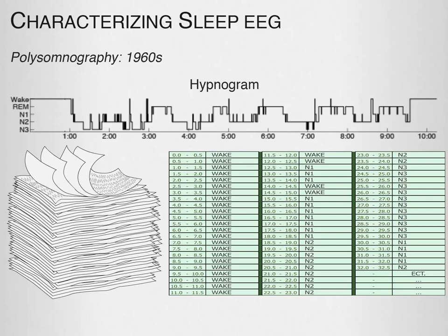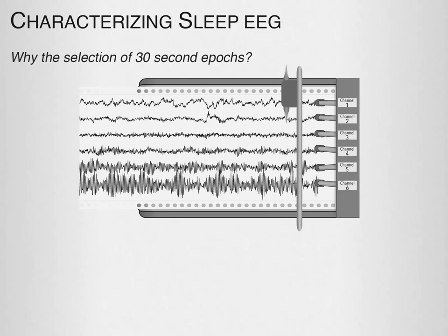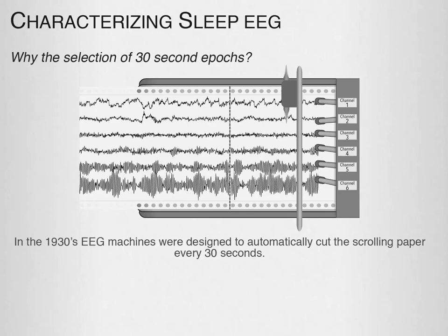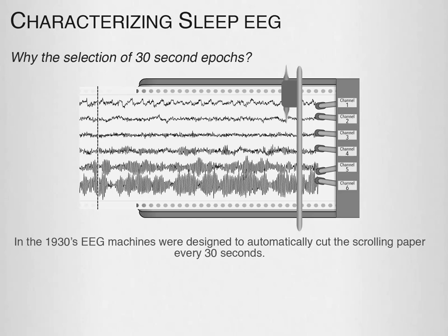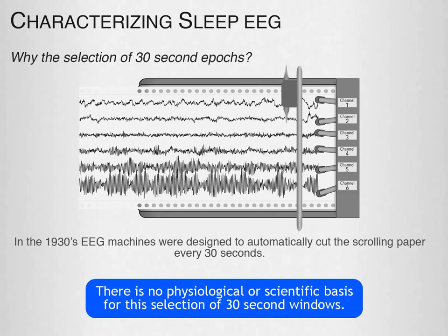Of note, the selection of 30-second epochs is a relic from the 1930s, where EEG machines were designed to automatically cut the scrolling paper every 30 seconds. R&K scoring simply adopted this 30-second epoch based on this mechanical function designed over 30 years before R&K scoring was developed. There is no physiological or scientific basis for this selection of 30-second windows.